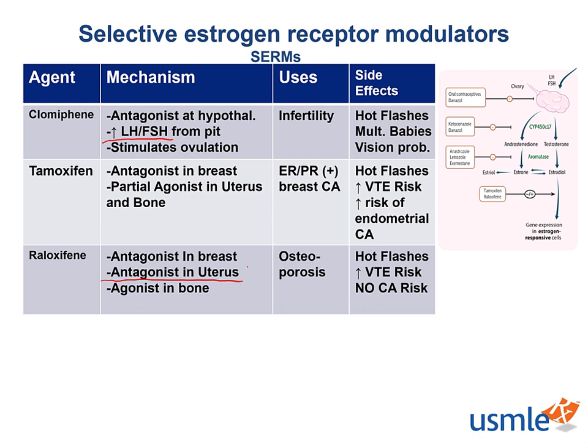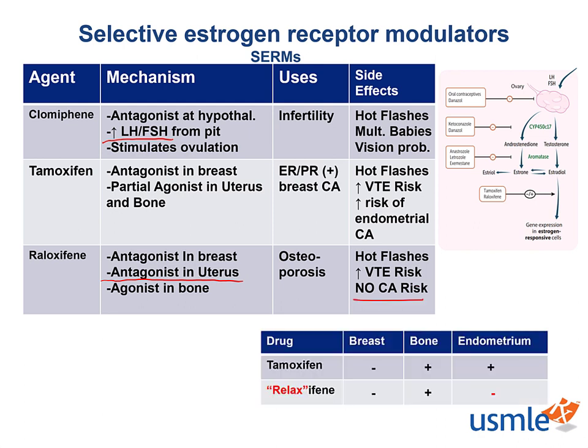Unlike tamoxifen, raloxifene is an antagonist on the endometrial tissue and therefore does not promote endometrial cancer. The bottom line is that whilst tamoxifen and raloxifene are both agonists at the bone, only tamoxifen is a partial agonist at the endometrium. So only tamoxifen is associated with increased risk of endometrial cancer — raloxifene is not. Therefore, tamoxifen would be safe to use in patients with a history of a hysterectomy since they no longer have an endometrium.